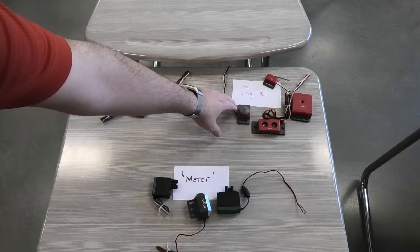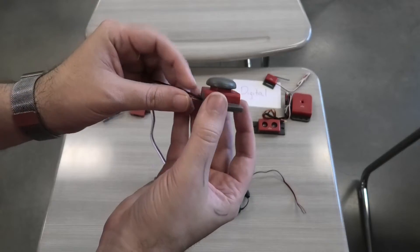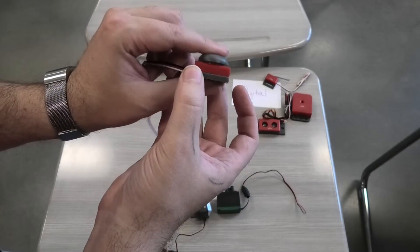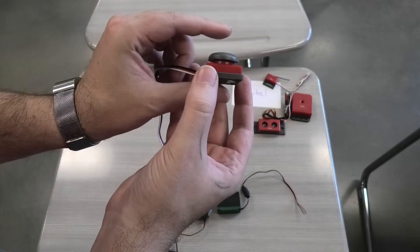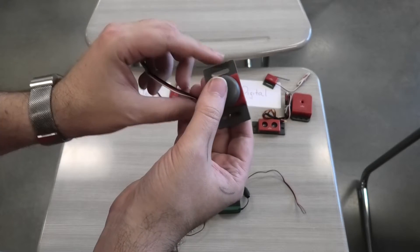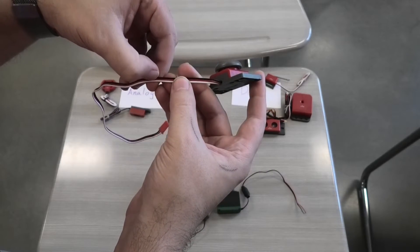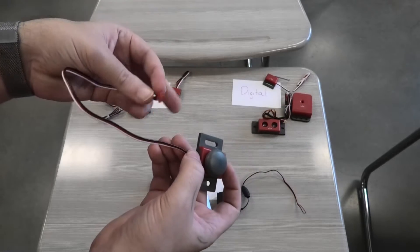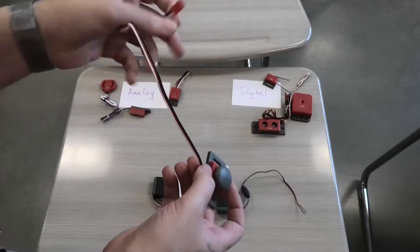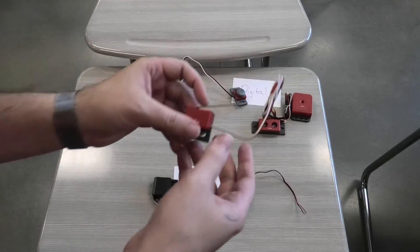Let's go for digital next. The digital components—we have a push button. The push button has one of two values: on or off. In the programming sense, that's either going to be zero or one. So we have two options here: either closed or open. It has the black, red, and white wires, so that's a three-wire as well. This is going to go in our sensor connection.